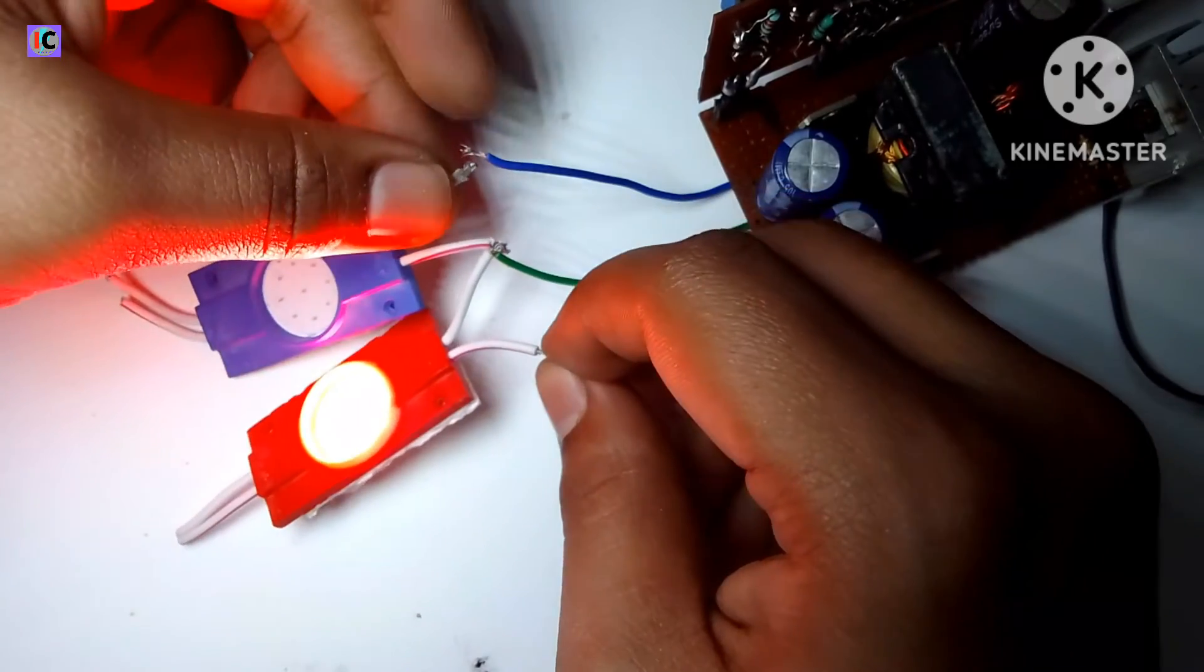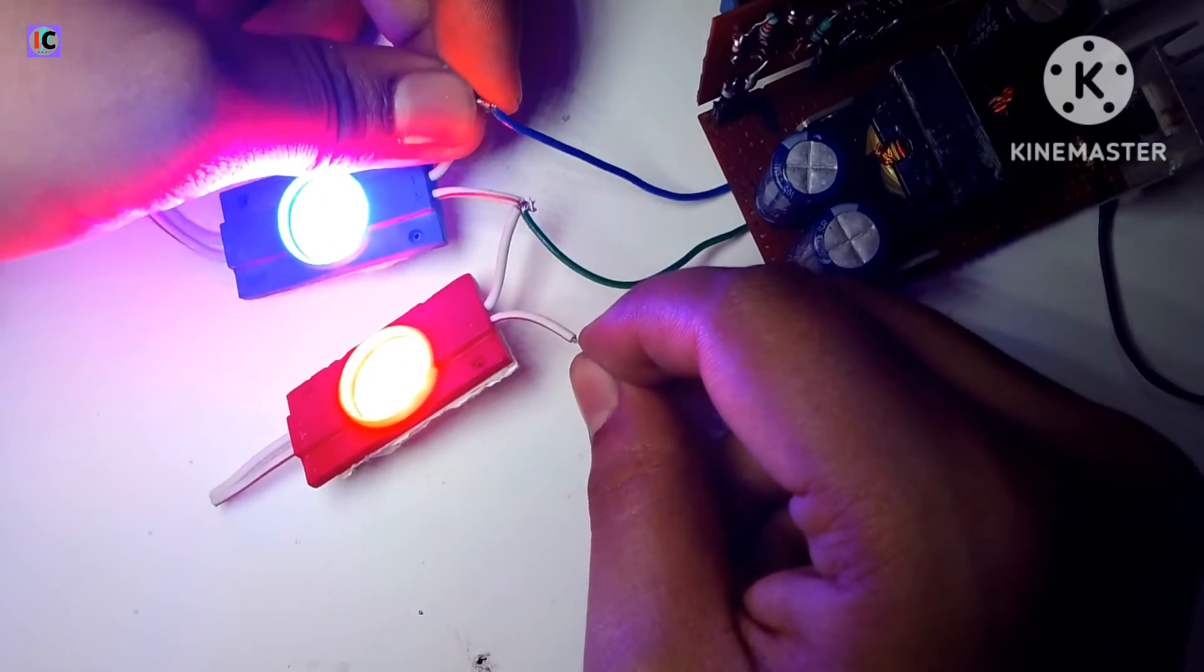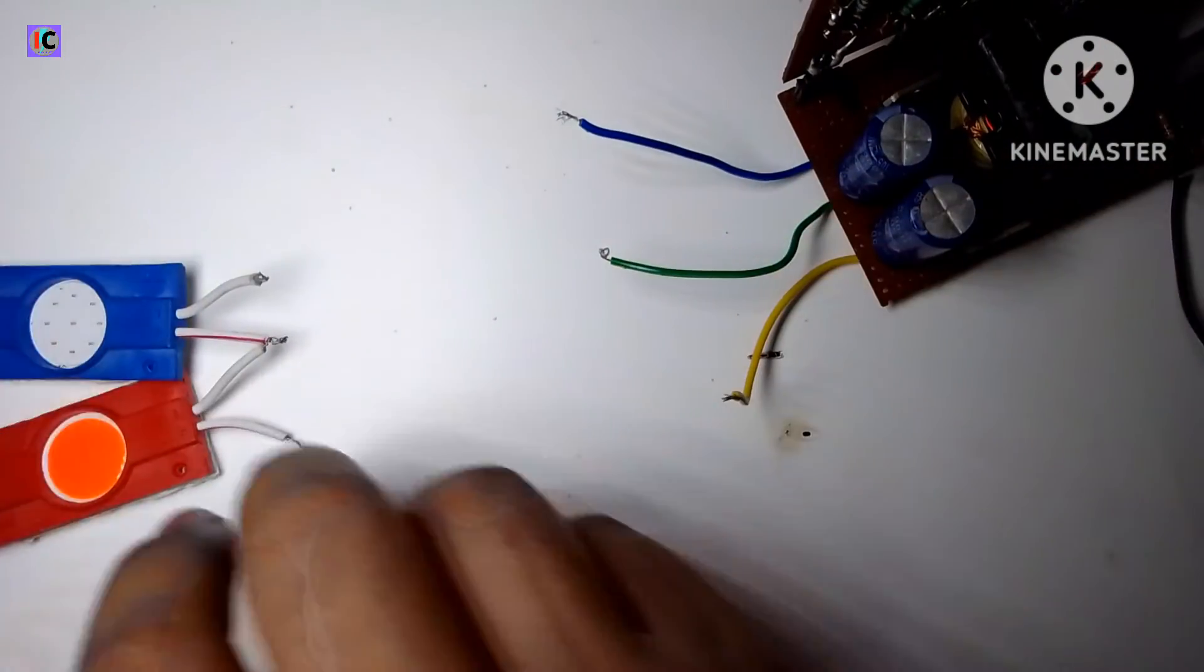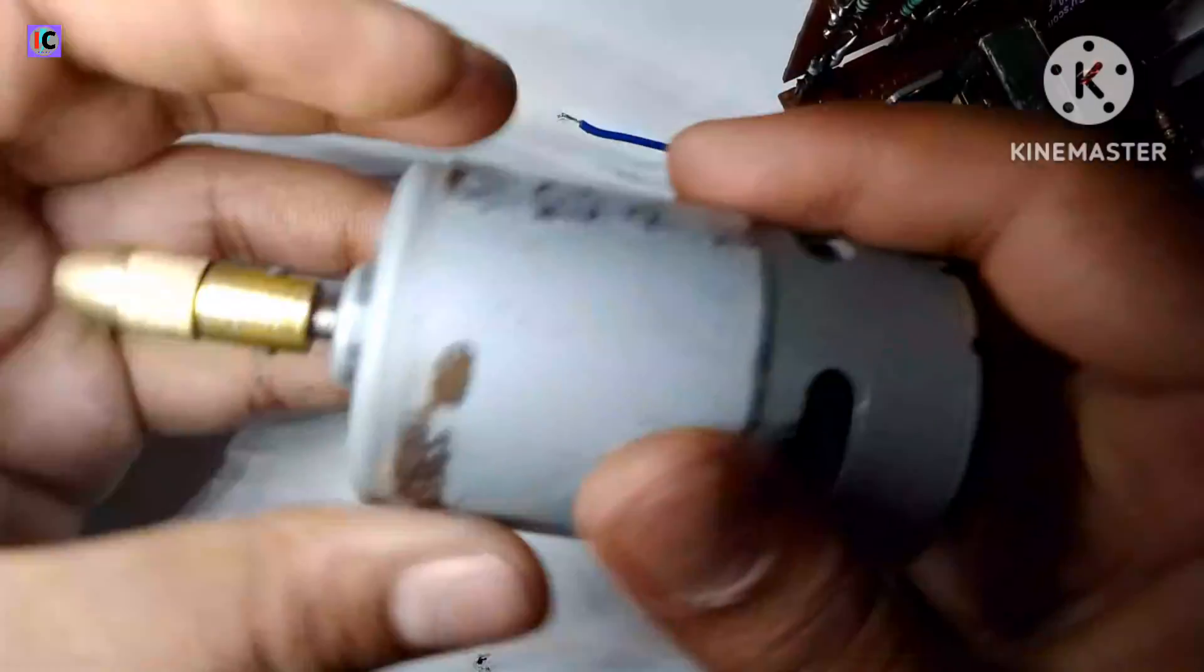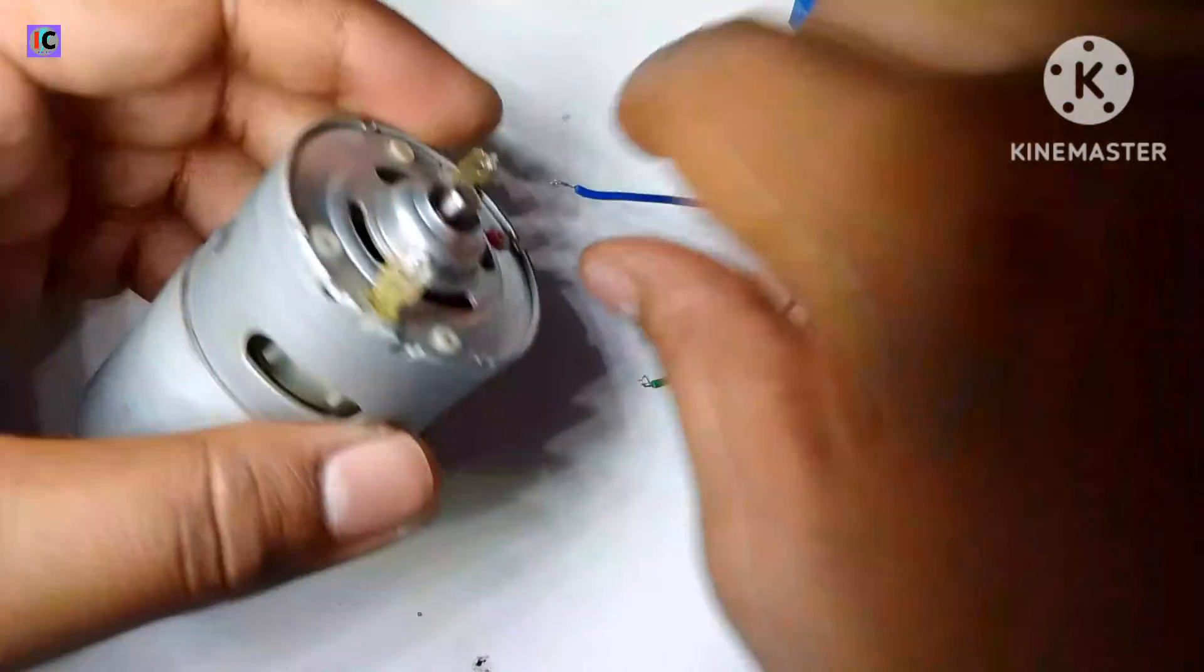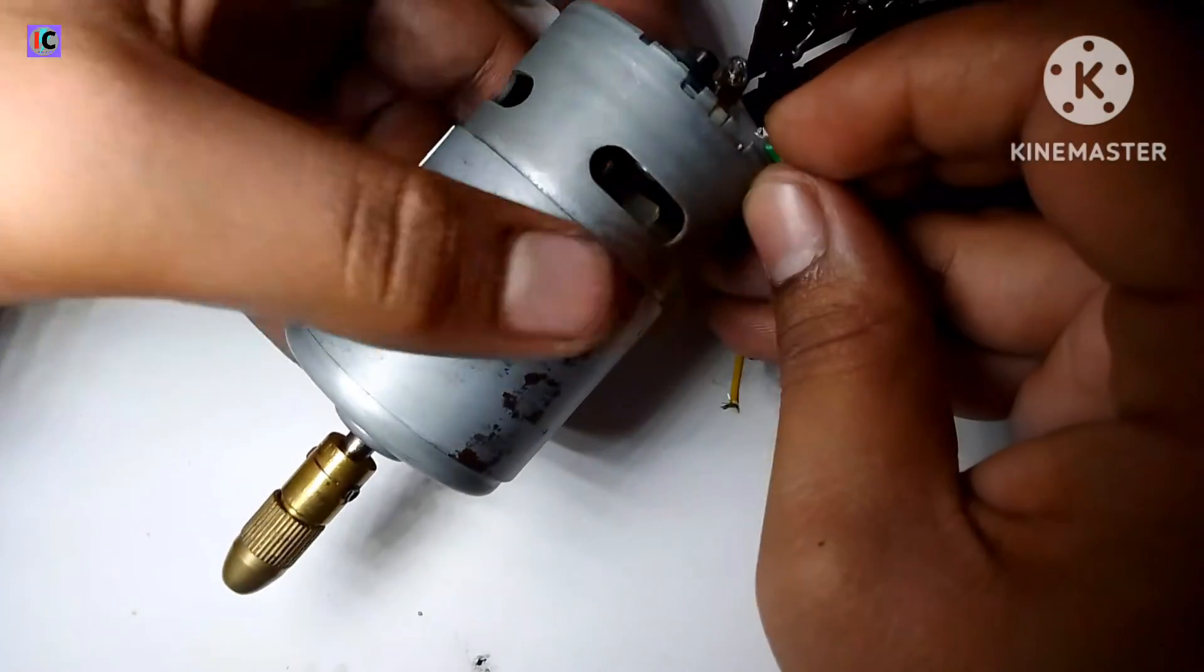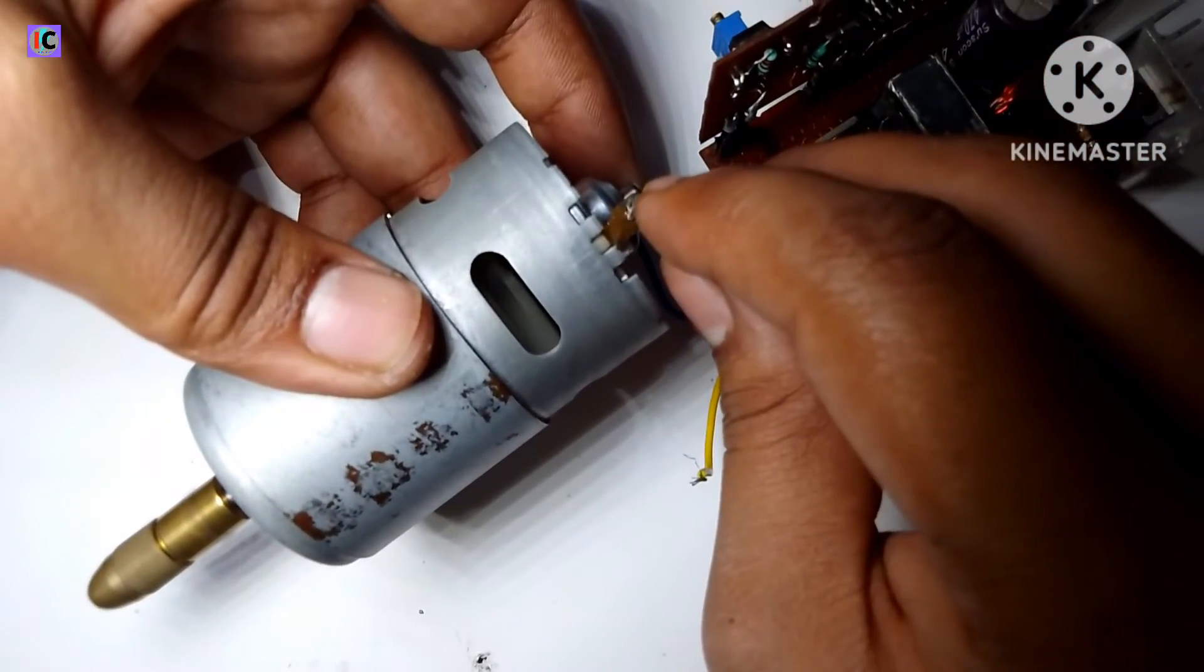Here you can see the red and blue LEDs are working, and the brightness is also very good. Here I am testing 775 12 volt DC motor, and the motor is rotating very fast, as you can see on the screen.